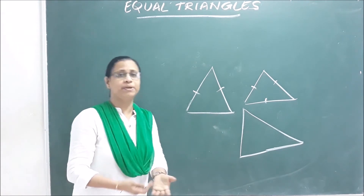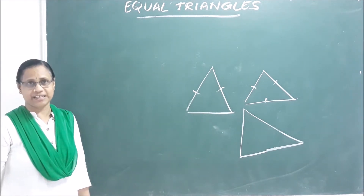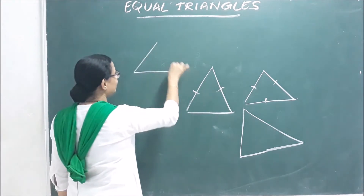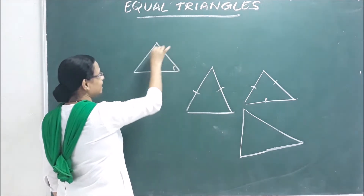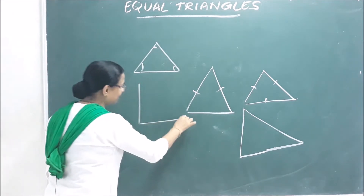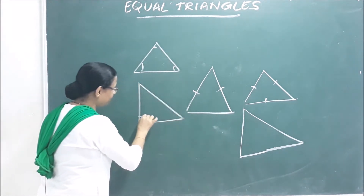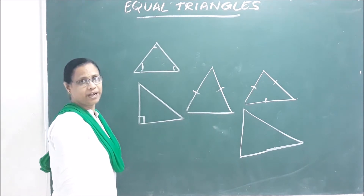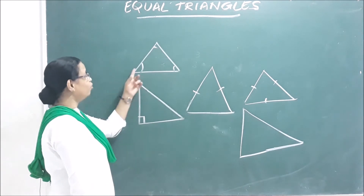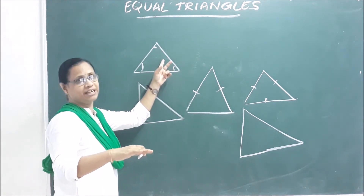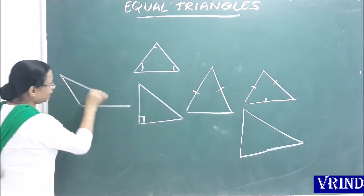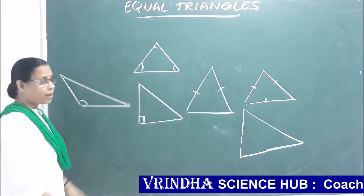If we talk about angles, we categorize triangles. One is the acute angle triangle, where all angles are below 90 degrees. A 90 degree angle gives us the right angle triangle. And a triangle with one angle greater than 90 degrees is the obtuse angle triangle.